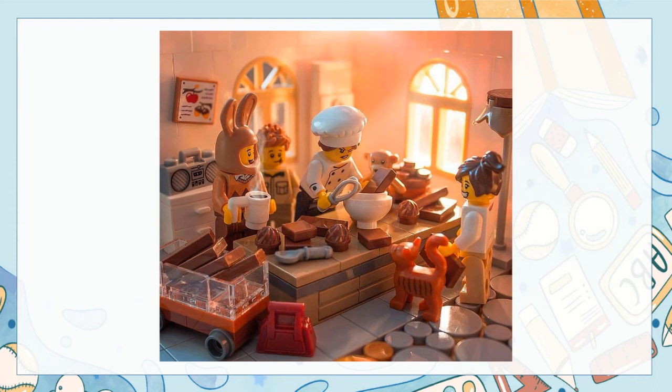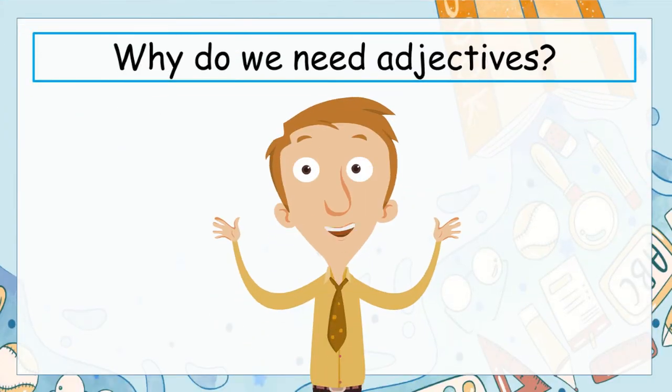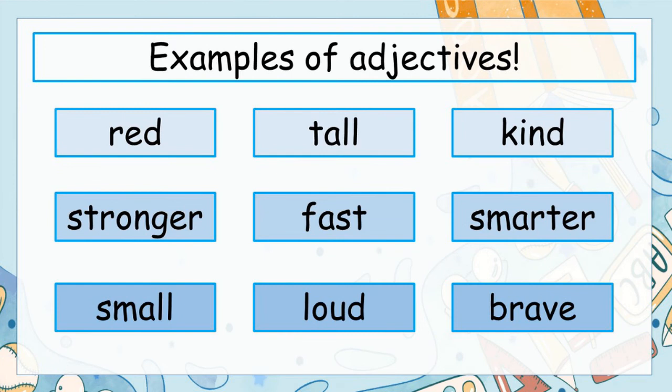Now do you see why they're important? All of these words are examples of adjectives. Some of them describe a noun — like red, or tall, or small — and some of them compare two nouns, like stronger or smarter. The important thing to remember is all of these words are adjectives because they give us more details about a noun.